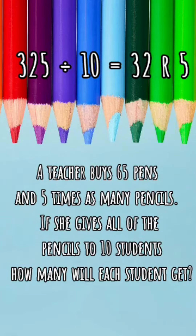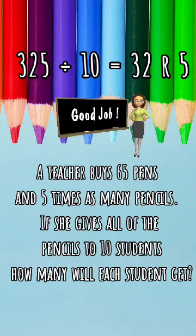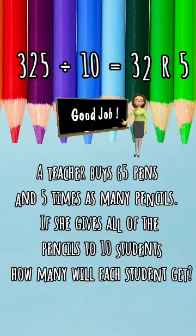I also need to interpret the remainder in this problem. I'm not going to give five pencils to 10 students evenly — that would be half a pencil each. So the five pencils will stay with the teacher, and each student will get 32 pencils.